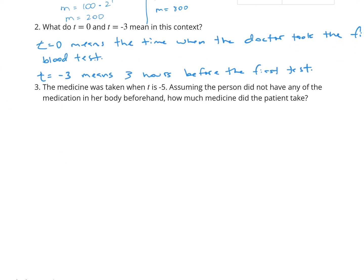Question 3: the medicine was taken when T is negative 5. Assuming the person had no medication in the body beforehand, how much medicine did the patient take? We use 100 times (1/2) to the negative 5th power, which is 100 times 2 to the 5th power. 2 to the 5th is 32, so 100 times 32 equals 3,200 milligrams.